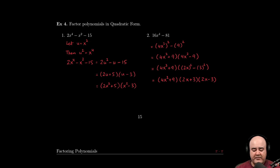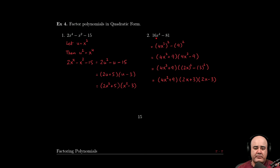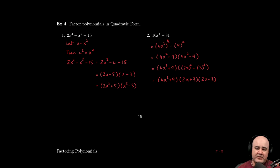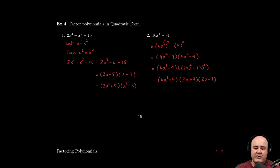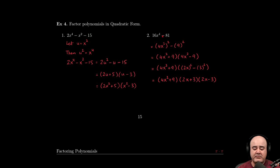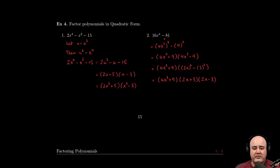In this next part we're looking at factoring 16x to the fourth minus 81. Now we start thinking, is there a GCF? Pause the video here and convince yourself that there is no GCF between 16 or 81. Then the next question: how many terms do we have? Well, we have two terms, so we want to try to see can we convert this into a difference of squares or a difference of cubes. It can't be a sum because we have a minus in the middle.